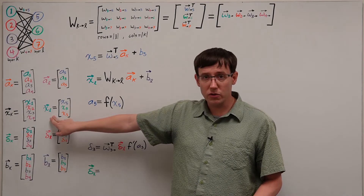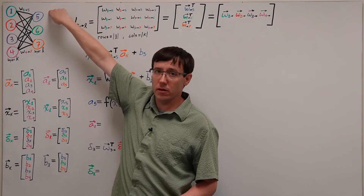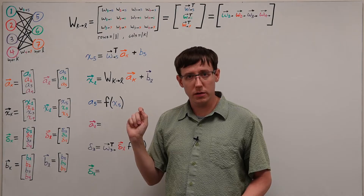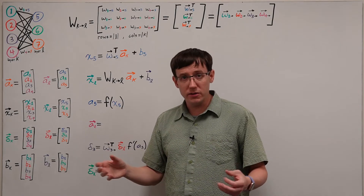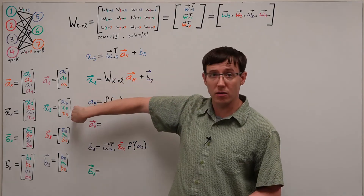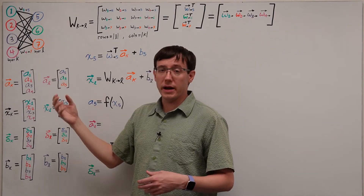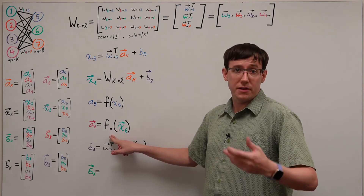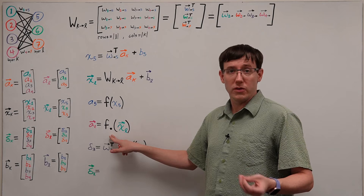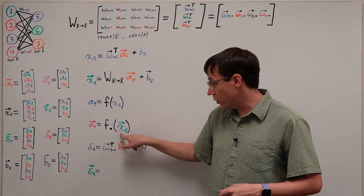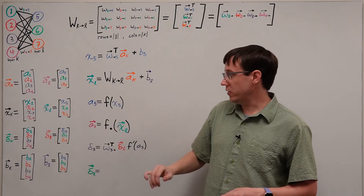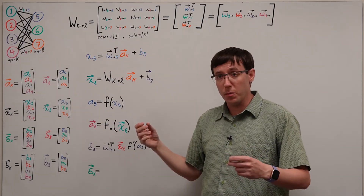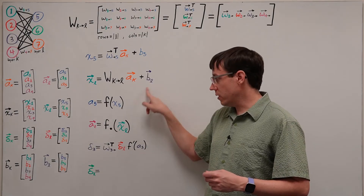Once we have this vector of inputs, we can think about getting the vector of activations for this layer. Each activation is computed by applying the activation function to that node's input. But if our activation function can be vectorized — that is, broadcast to operate on each element of an array — then we can calculate all of the activations by a single call to our vectorized activation function. I will use the notation f-dot, which is consistent with how Julia represents element-wise operations, to indicate that the function f is being applied to every element of the vector xL, and this produces each of the elements of the vector aL. This means that an entire forward pass through a neural network can be performed by matrix-vector multiplication, vector addition, and element-wise functions.